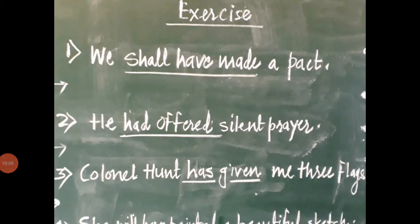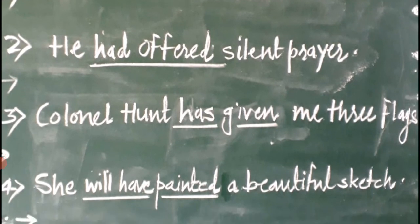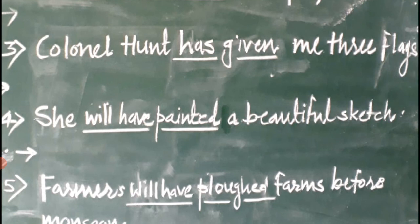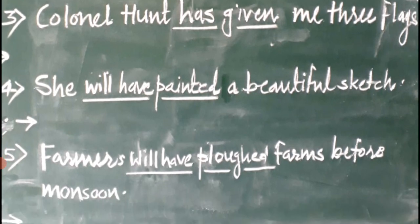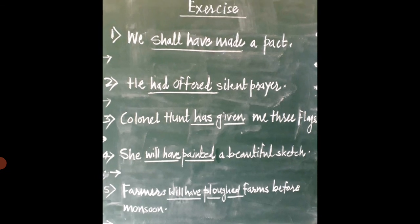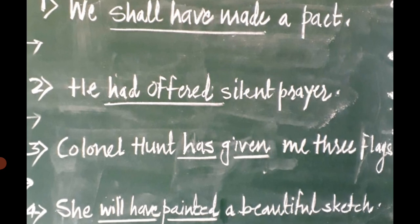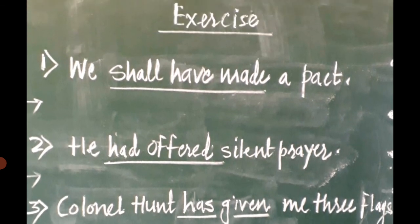Here are a few more sentences for practice: 'We shall have made a pact.' 'He had offered silent prayer.' 'Colonel Hunt has given me three flags.' 'She will have painted a beautiful sketch.' And: 'Farmers will have ploughed farms before monsoon.' I appeal to you all to please try to solve these sentences into passive construction. Once you get the right idea about the concept, you can easily solve them and gain confidence in converting active sentences into passive.